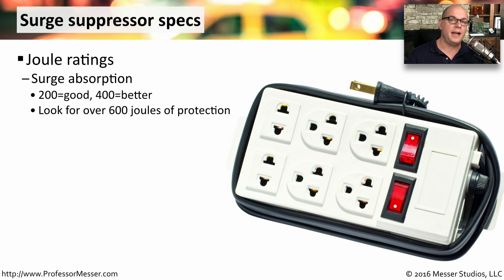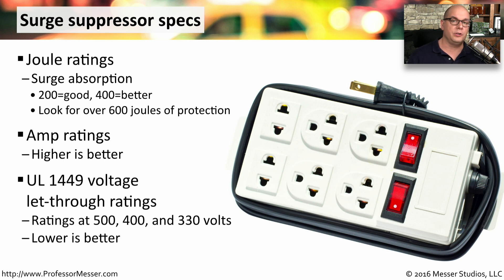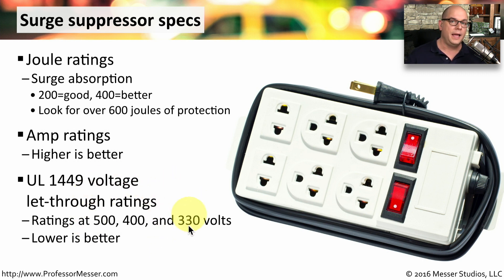Another important specification is how much of a surge the suppressor can handle, measured as a joule rating. The higher the number of joules, the more protection it can provide against power surges. As you use more current, the number of amps will increase, so make sure your surge suppressor can handle the amps you'll need. In the United States, Underwriters Laboratories categorizes surge suppressors with a let-through rating to identify how much voltage will be let through. You'll see surge suppressors rated at 500, 400, and 330 volts — and you want to find the one with the lowest rating.